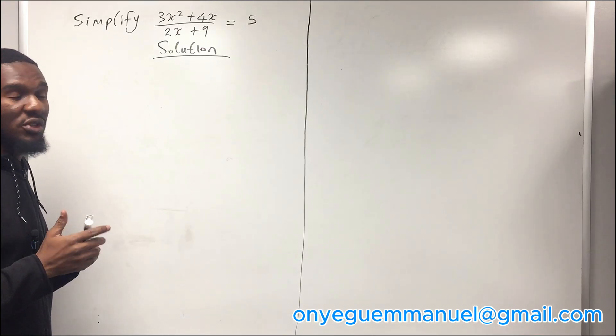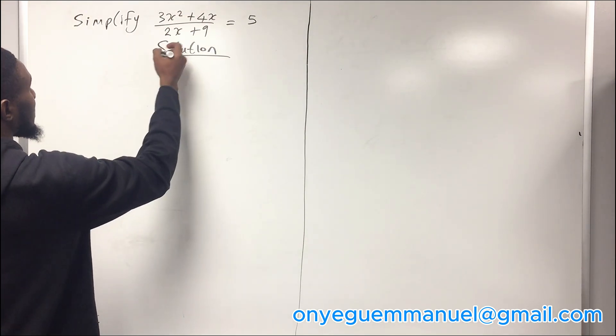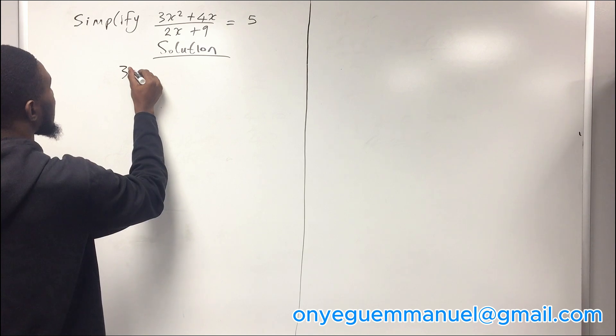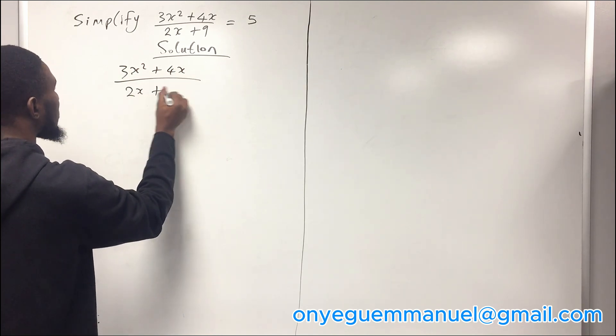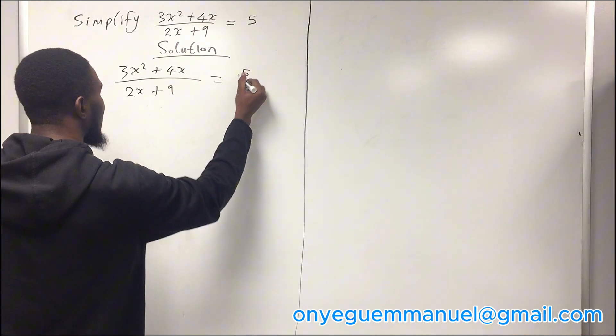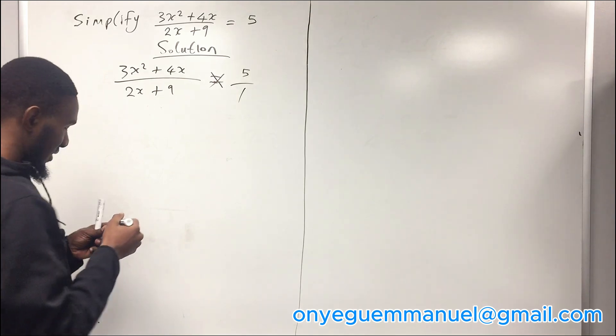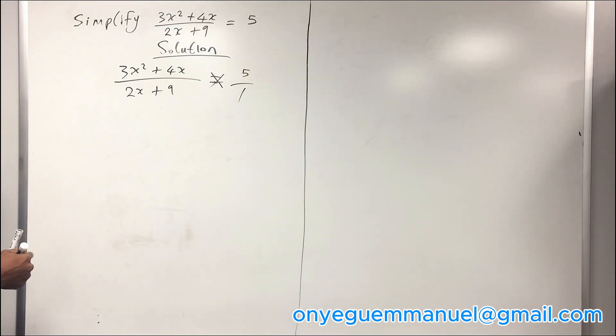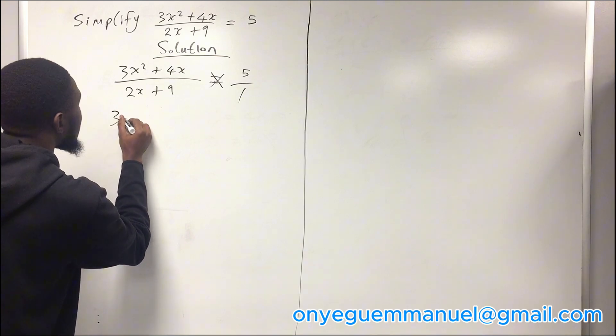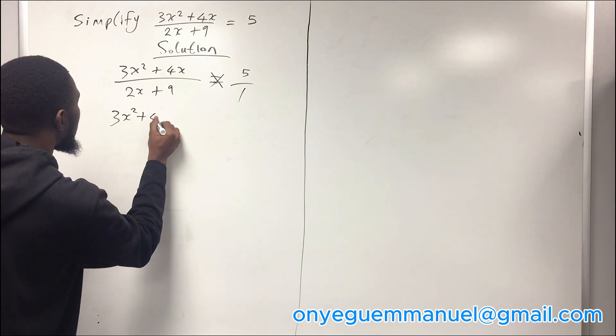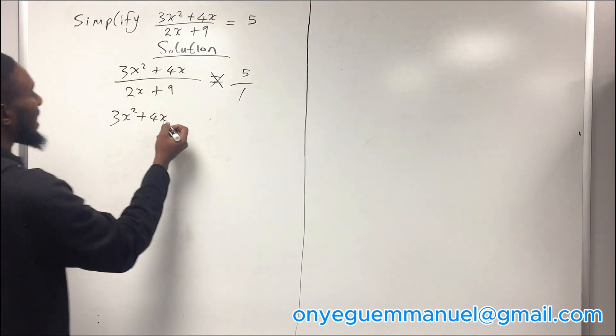The first thing you do here is cross multiply. When you cross multiply, you have 3x squared plus 4x over 2x plus 9 equals 5. You have invisible 1 here, you cross multiply to make it linear.